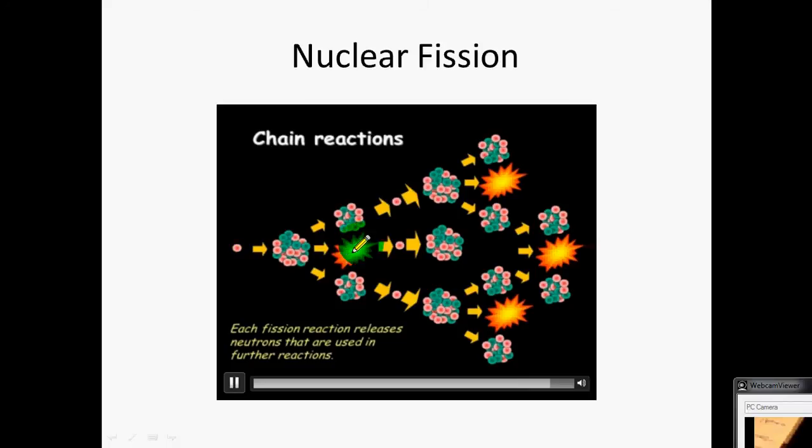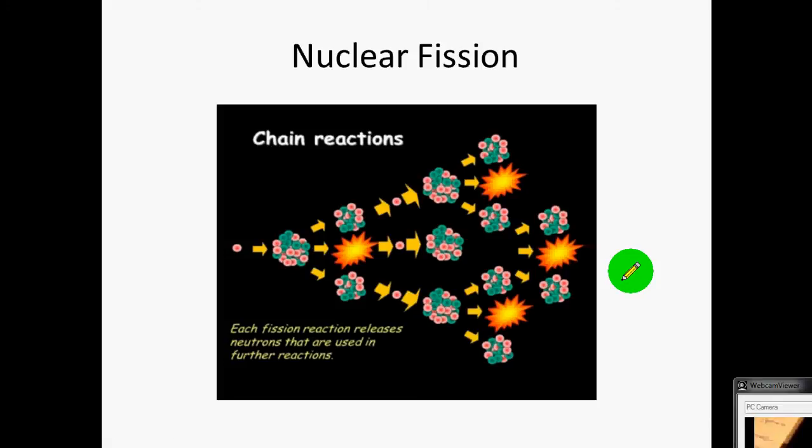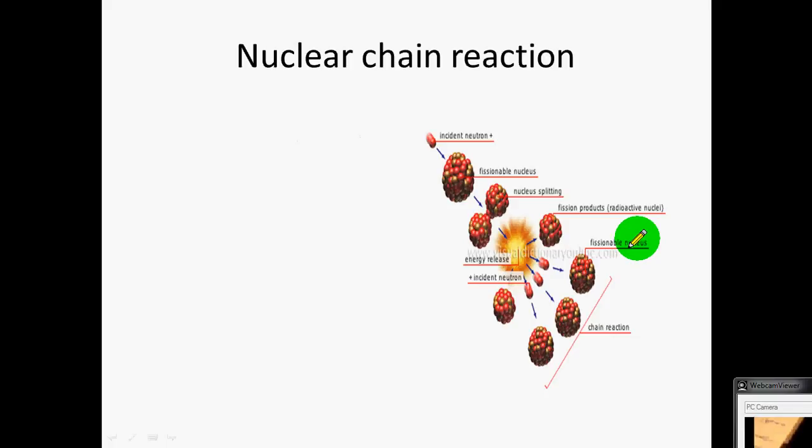We've gone from one bang here, then we've got three splitting, then we've got those are going to cause another nine to split, and then 27 and 81, and this thing snowballs in a chain reaction. That chain reaction takes billionths of a second, so a vast amount of energy is released. This process can be very dangerous—it can be used in a bomb. Or if you control it, you can use it in a power station. If the control goes wrong, the power station goes up in smoke—Fukushima or Chernobyl.